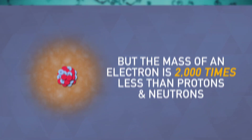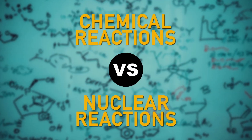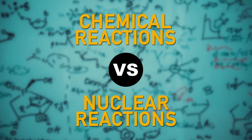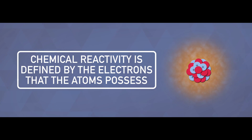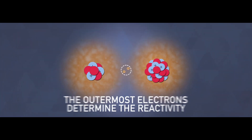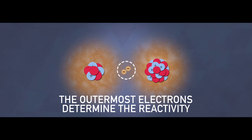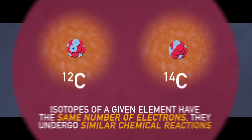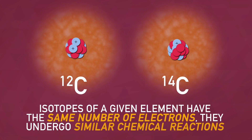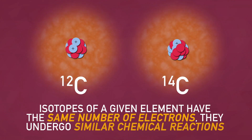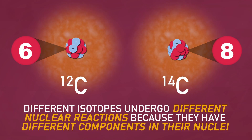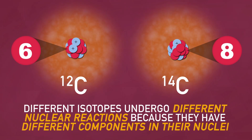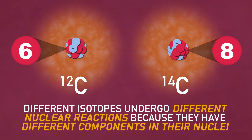But since the mass of an electron is almost 2,000 times less than that of protons and neutrons, we can basically ignore them. When it comes to atoms and their behavior, there's an important distinction to make between chemical reactions and nuclear reactions. Chemical reactivity is defined by the electrons that atoms possess. When atoms come into contact with one another, it's their outer electrons that interact and determine the type and intensity of the reaction. Since isotopes of a given element have the same number of electrons, they will undergo similar reactions. On the other hand, nuclear reactions rely on the particles in the nucleus, so different isotopes will undergo different nuclear reactions because of the differences in the makeup of their nuclei.